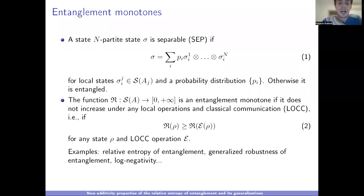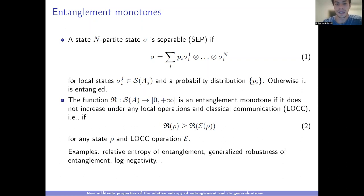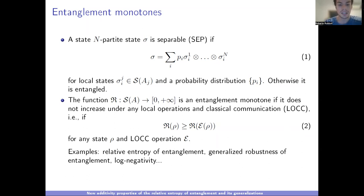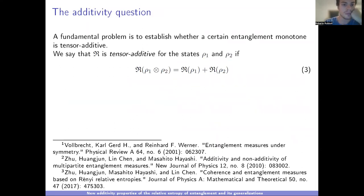An entanglement monotone is something that quantifies the entanglement content of a state. It's a function R from the set of states to positive values — the higher the value, the higher the entanglement. A basic required property is that it doesn't increase under any local operation and classical communication (LOCC). Under LOCC you cannot create entanglement, so the value of the monotone must decrease. Examples include relative entropy of entanglement and generalized robustness of entanglement. I will mainly focus on relative entropy of entanglement.